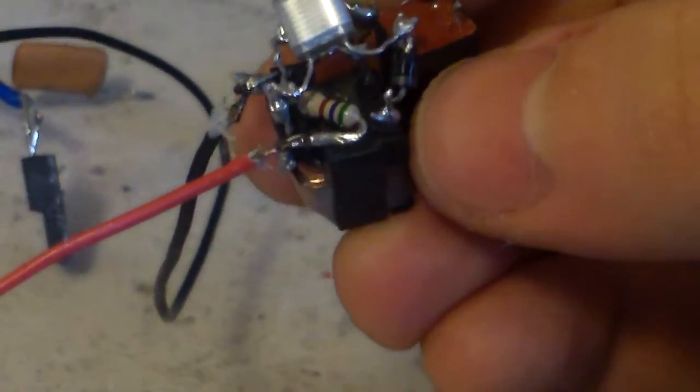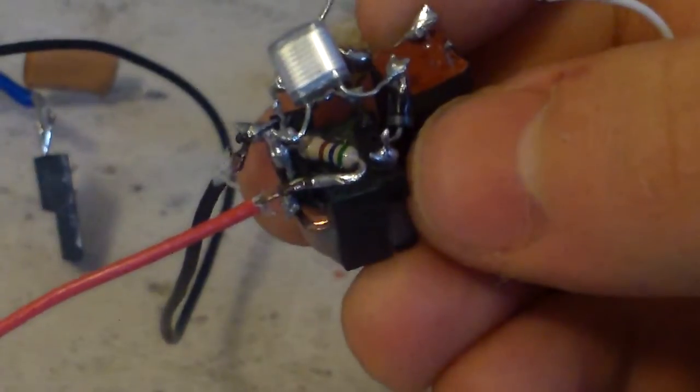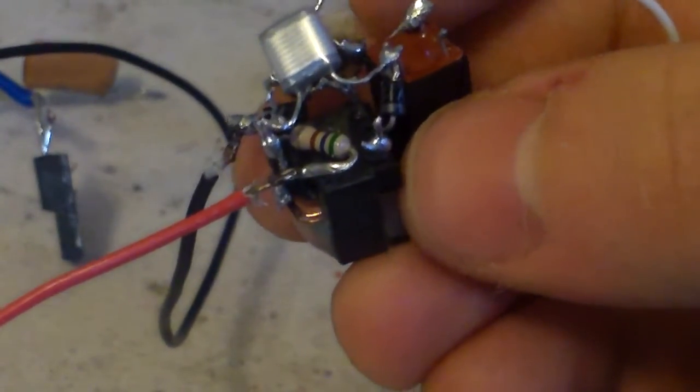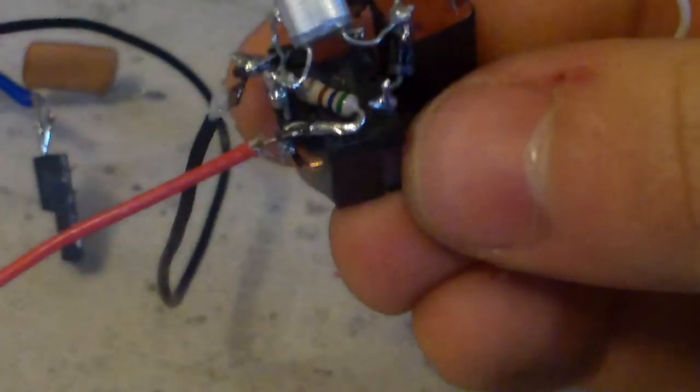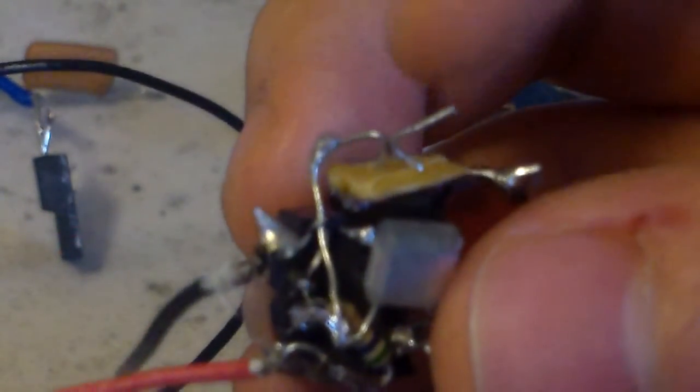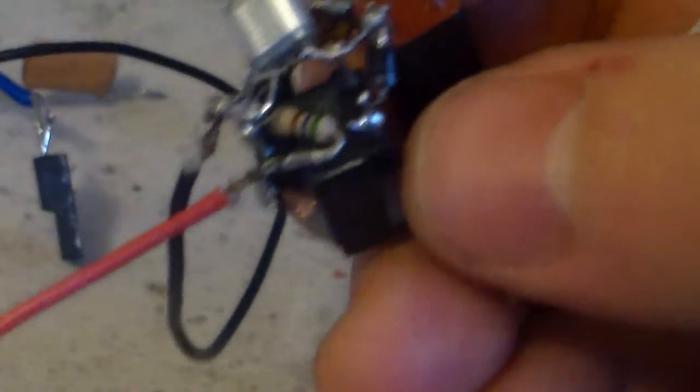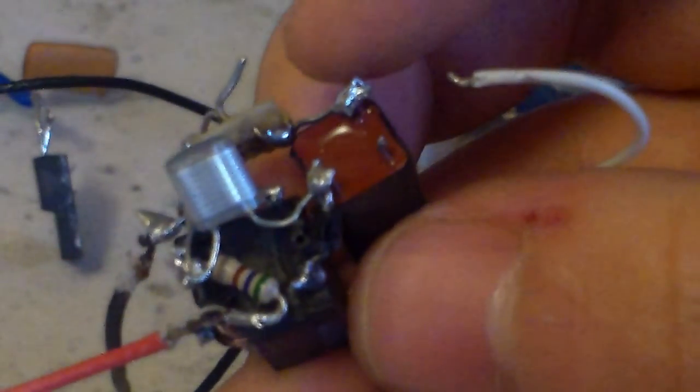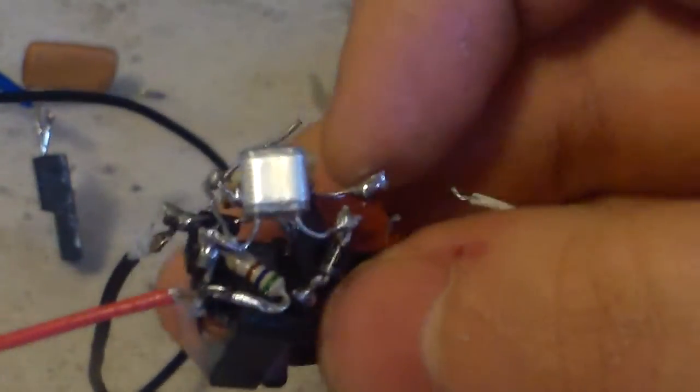And with a little fiddling around I got it to put out about 600 volts. And that charges this capacitor. And then it goes through this small little spark gap right here, and then into this trigger coil from another flash unit.